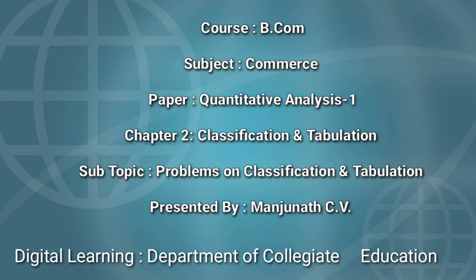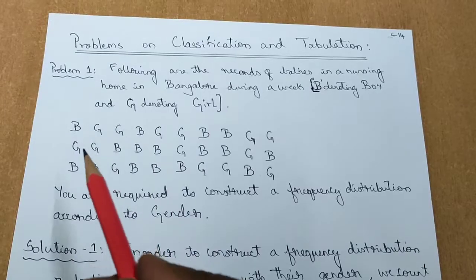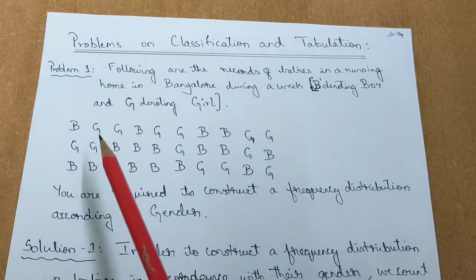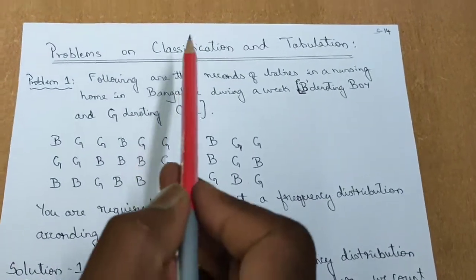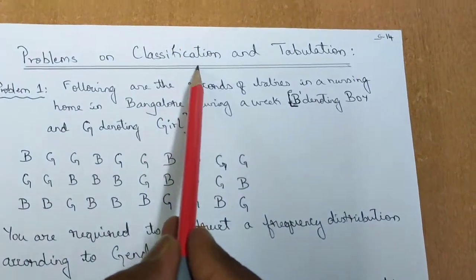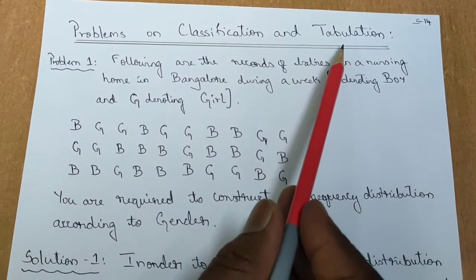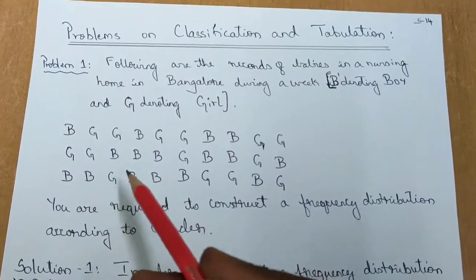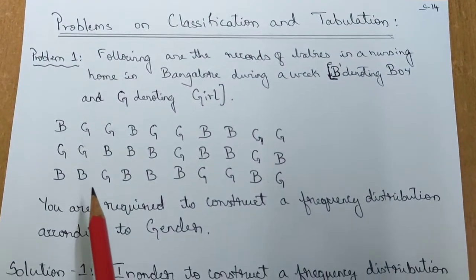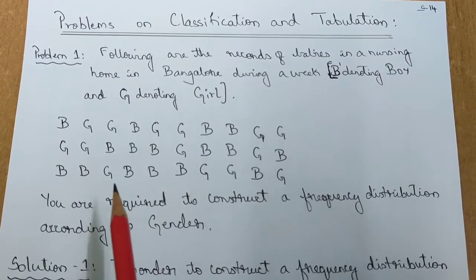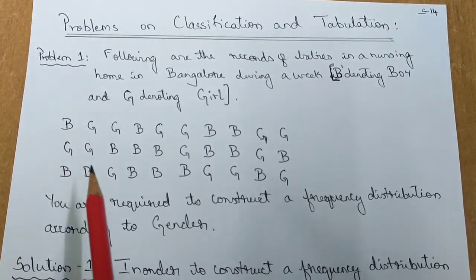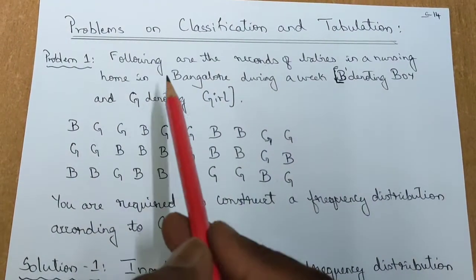In the previous sessions, we have discussed the theoretical aspects. So now let us get into the problems on this topic. Till now we have discussed all the theoretical concepts about Classification and Tabulation. Now let us look into how to prepare a Frequency Distribution on the basis of Classification and Tabulation.